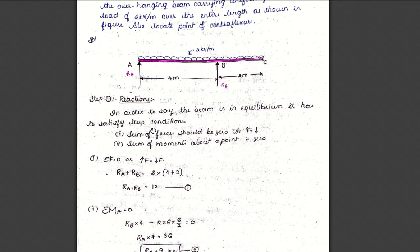In order to calculate the shear force and bending moment diagrams, we have to go step by step. The first step is to find out reactions. So in order to say any beam is in equilibrium, it has to satisfy two conditions. One is that the sum of forces should be zero, or we can say all upward forces are equal to downward forces. The second condition is that the sum of moments about a point is zero.